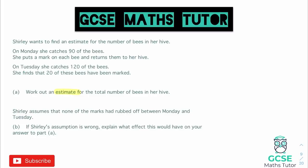We're going to start by looking at the first capture. On Monday she catches 90 bees, but we don't know the total. If we write that as a fraction, she caught 90 out of an unknown total. We'll use the letter X for that unknown, so it's 90 over X. That X is what we're trying to figure out — the total number of bees in her hive.